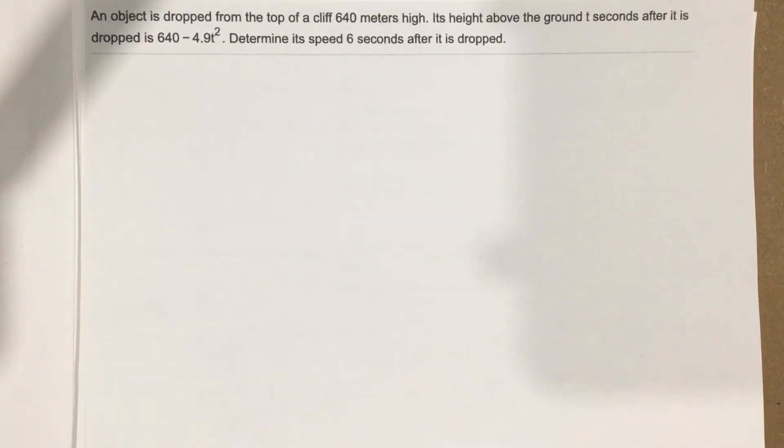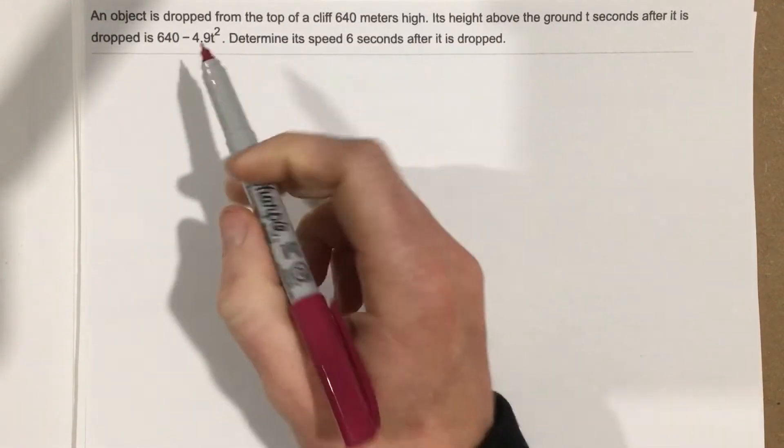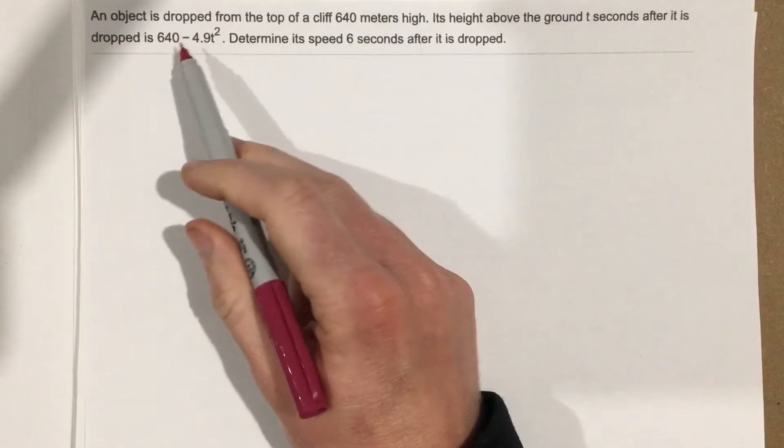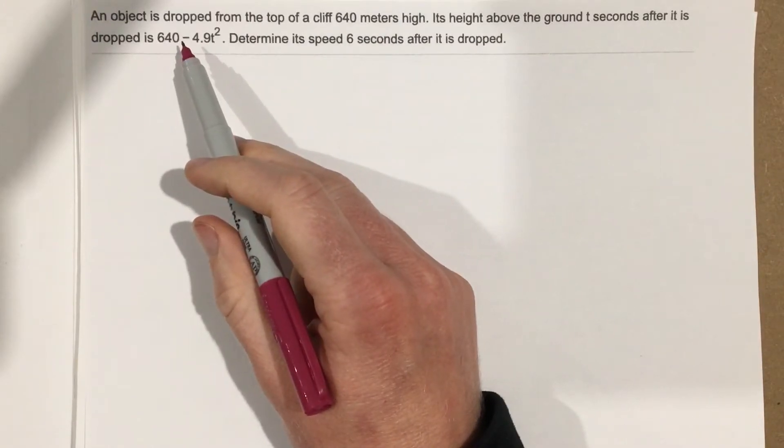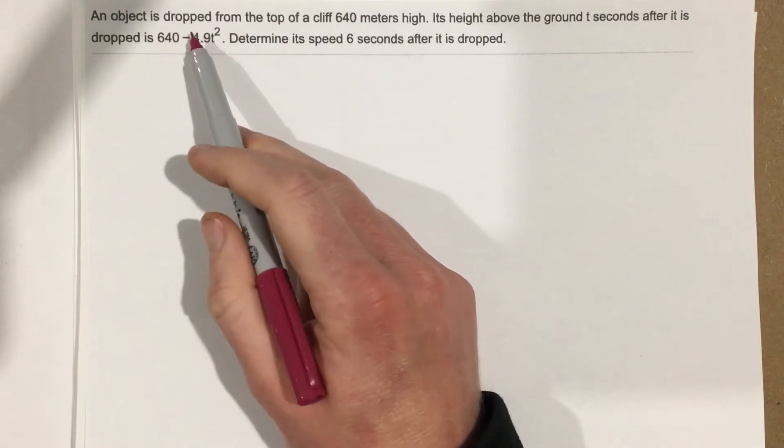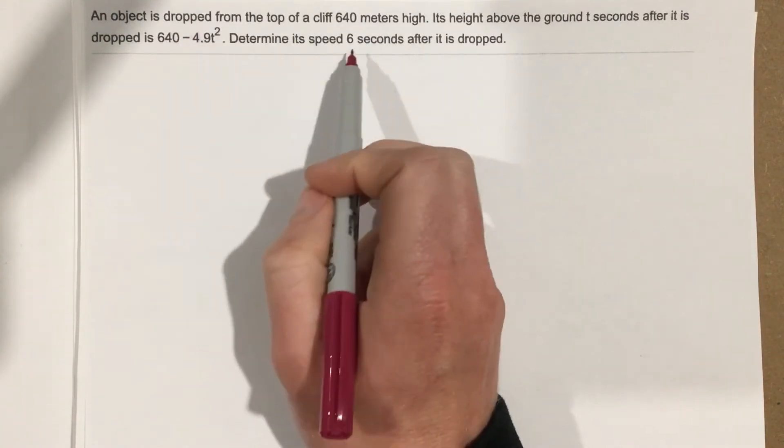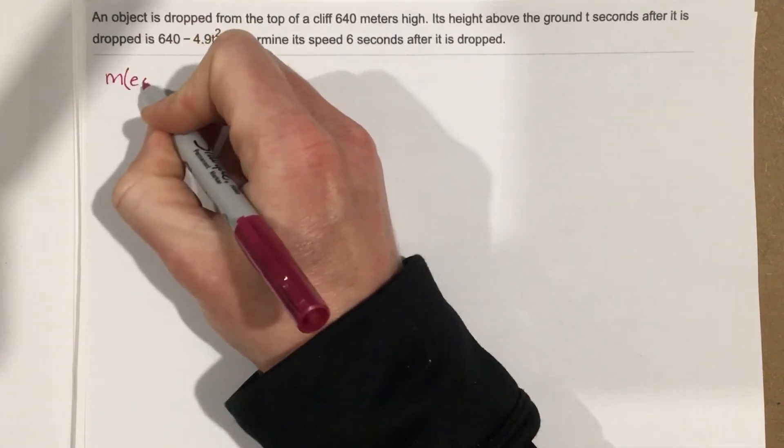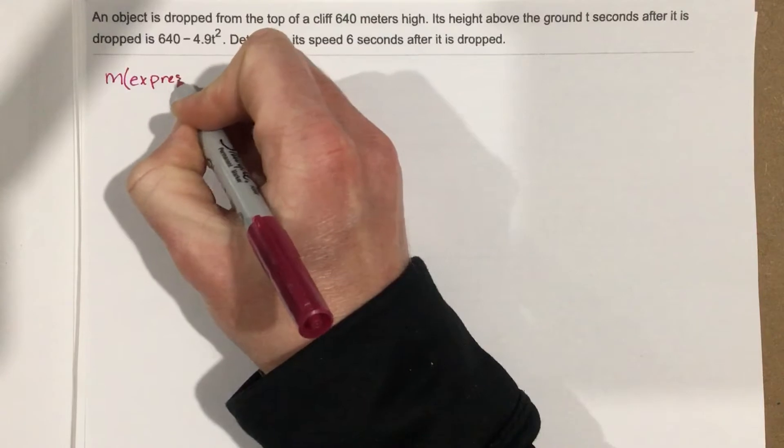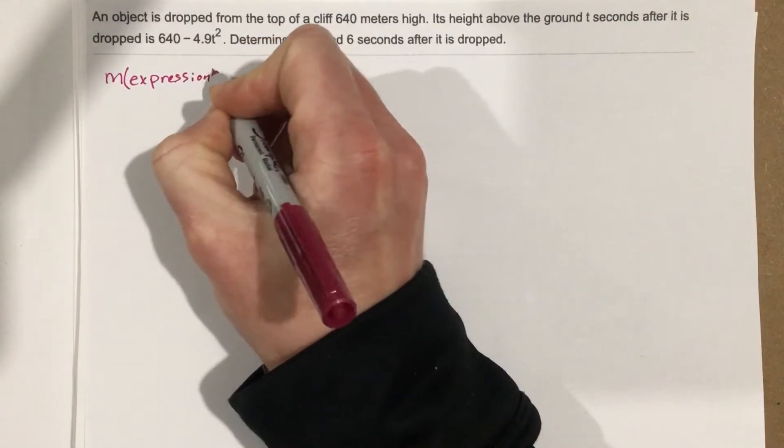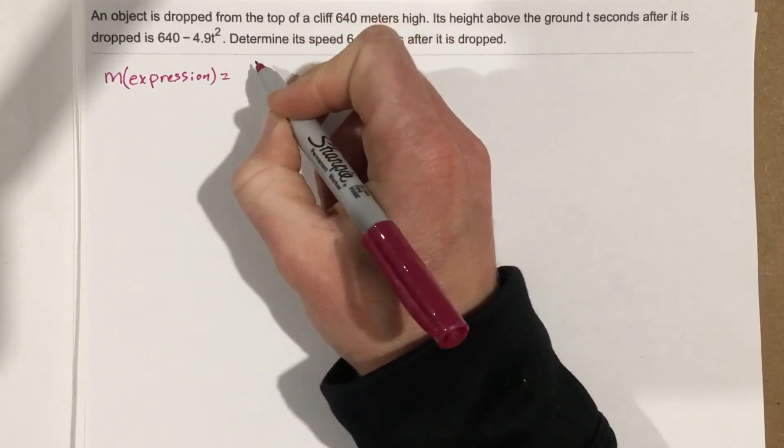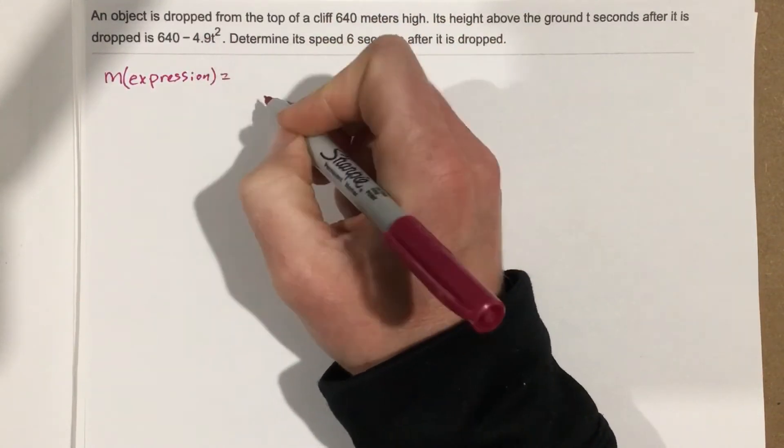What they're asking us to do is take this equation and after six seconds figure out how fast this thing is moving. If we want to do that, we want to find the slope that this line has at x equals 6. So we want to find the slope expression to start, and once we find the slope expression we can plug in x equals 6 and we'll know our slope at this point, and that'll tell us our velocity.